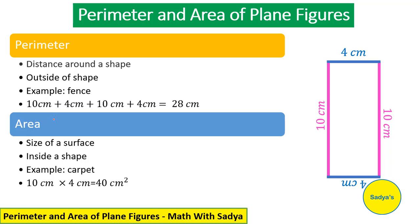Now let's see what area is. Area is the size of the surface — how much space a figure has taken. It is the inside of a shape. For example, if you have a room in which you have to put a carpet, how much carpet would you need? That means you will find the area of your room.